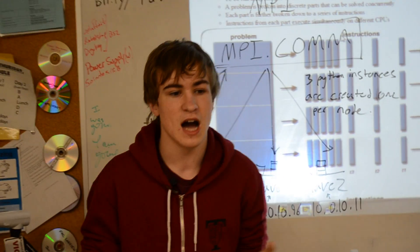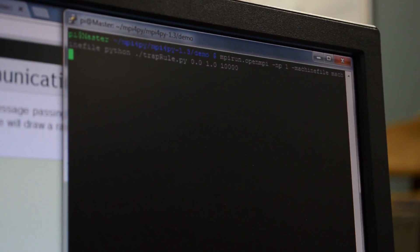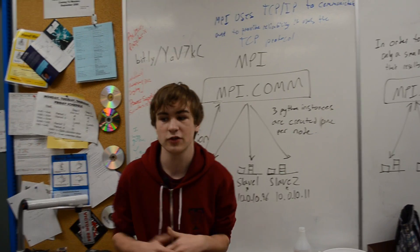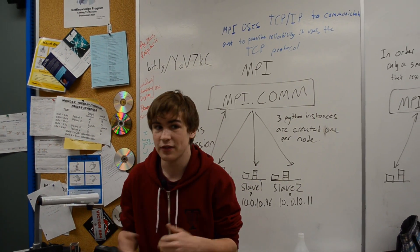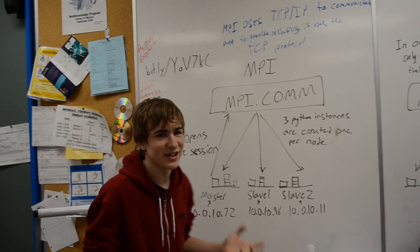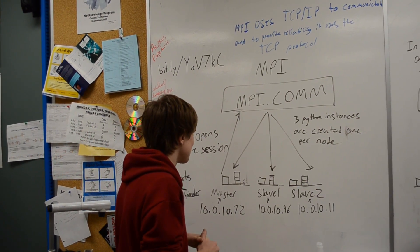So, the way you do that is using a program called MPI, or Message Passing Interface, and how it works is just like this. You have the master node, which is the initial computer that starts all of the computation and the communication, normally called the master node. It initializes the MPI communicator.